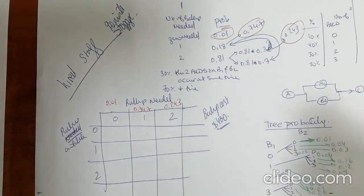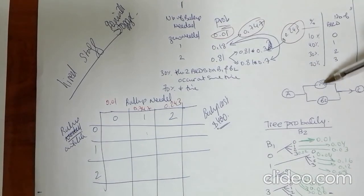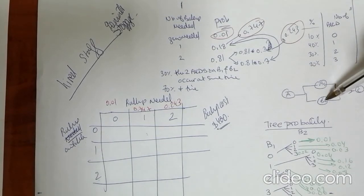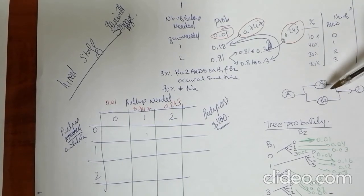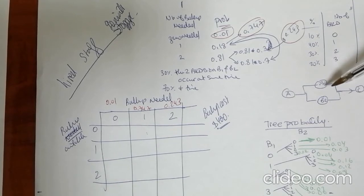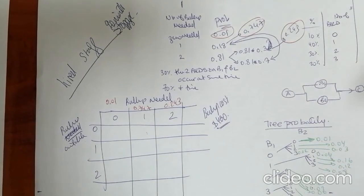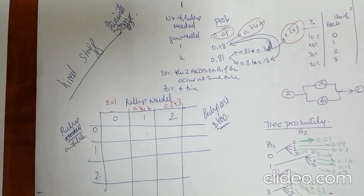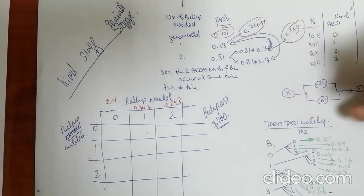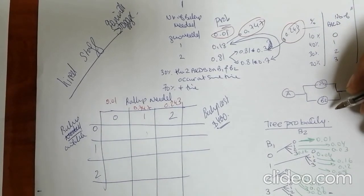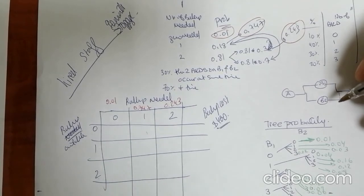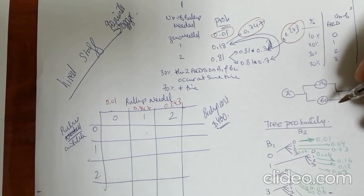To recap the assumptions: we have two machines, B1 and B2, both in parallel. The study asks whether we need zero, one, or two backup systems. Both machines are equivalent — they have the same scrap rate, the same breakdown rate, and the same capacity. They are exactly the same in all characteristics.